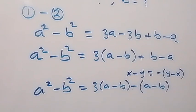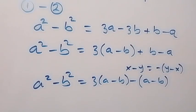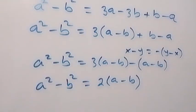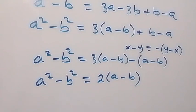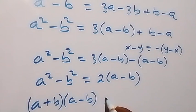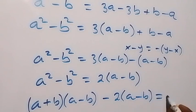Combining the bracket terms — 3 minus 1 gives 2 — so this reduces to 2 into bracket (a minus b). And we have a squared minus b squared equals 2(a minus b). On the left-hand side we can write a squared minus b squared as (a plus b)(a minus b). Taking everything to one side, that becomes (a plus b)(a minus b) minus 2(a minus b) equals 0.